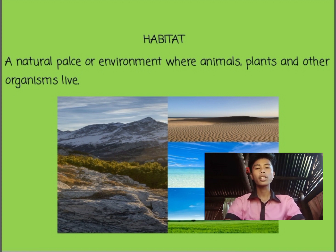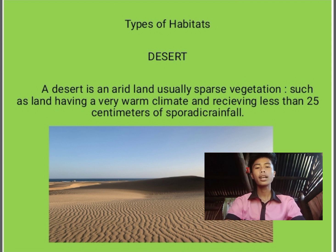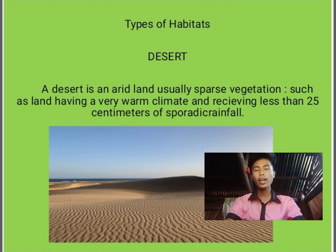What comes to mind when you hear the word desert? A desert is an arid land with sparse vegetation, having a very warm climate and receiving less than 25 cm of sporadic rainfall annually. In the desert, we find some animals and plants, but not many because the very warm temperature causes most of them to die and not survive.